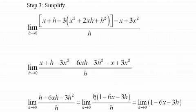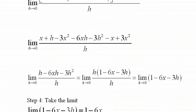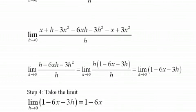Now I can factor out an h and then cancel the h's. I end up with a fairly simple expression, which does allow me to take h to zero. So that's my fourth step—I take h to zero and get 1 minus 6x.